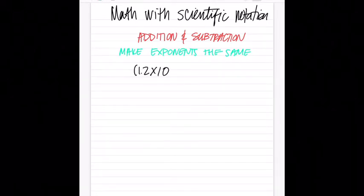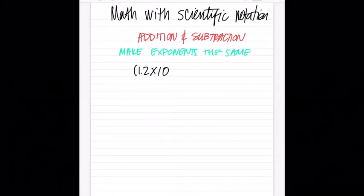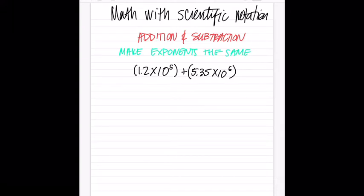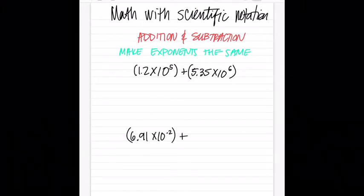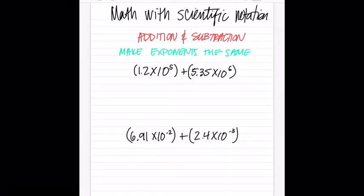First problem: 1.2 times 10 to the fifth, plus 5.35 times 10 to the sixth. Second problem: 6.91 times 10 to the negative second, plus 2.4 times 10 to the negative third. I want to do one with positive exponents and one with negative exponents, because the negative exponent example is where a lot of people mess up.